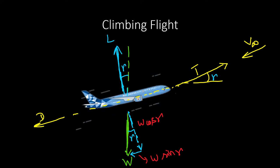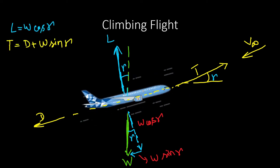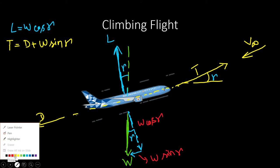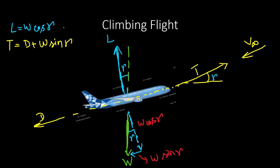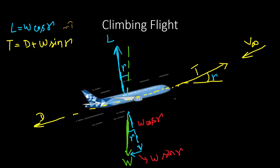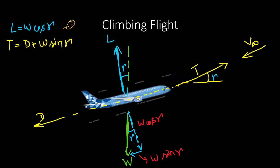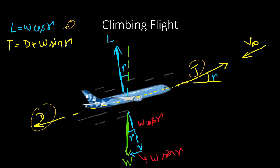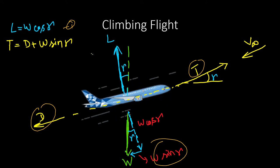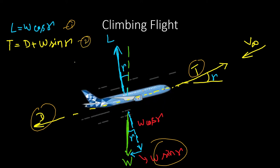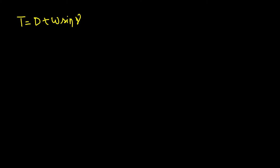If I write down the equations of equilibrium parallel and perpendicular to the flight path, the equations will be: L = W·cosγ — this is equation 1, the equation of motion perpendicular to the flight path. And T = D + W·sinγ — this is equation 2, the equation of motion parallel to the flight path.